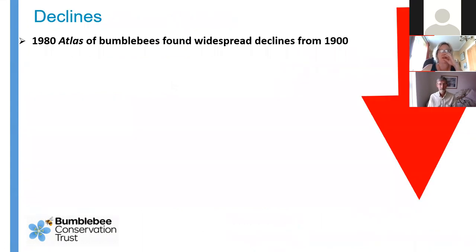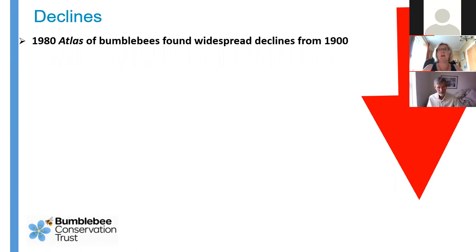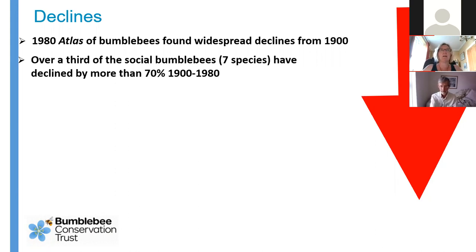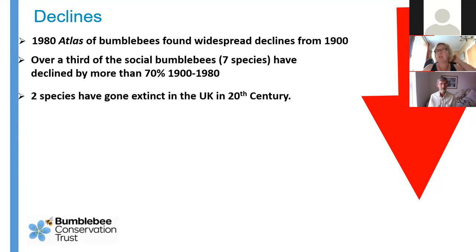Bumblebees as a group within the UK and globally have been in decline for decades. In the UK it was the 1980 atlas of bumblebees that was really able to demonstrate that decline, based on records going back to 1900. They found that over a third of our social bumblebees - we have 18 species - have declined by more than 70% in those 80 years. That's quite a dramatic decline, and two species had gone extinct.